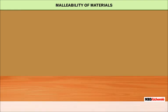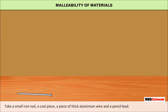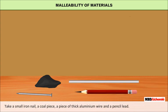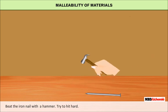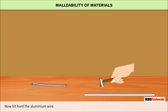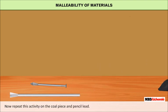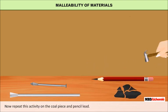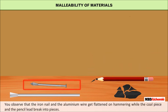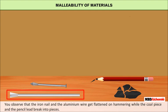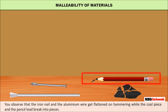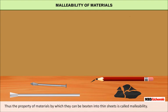Let us do an activity to demonstrate malleability of materials. Take a small iron nail, a coal piece, a piece of thick aluminium wire and a pencil lead. Beat the iron nail with a hammer, then hit the aluminium wire. Repeat this on the coal piece and pencil lead. You will observe that the iron nail and aluminium wire get flattened on hammering, while the coal piece and pencil lead break into pieces. Thus, the property of materials by which they can be beaten into thin sheets is called malleability.